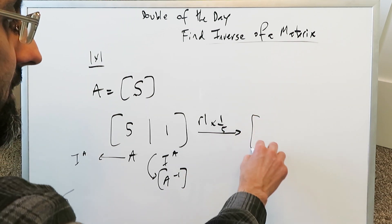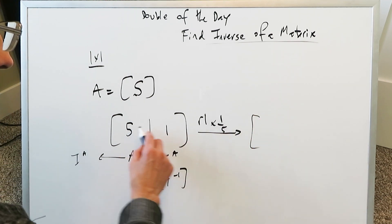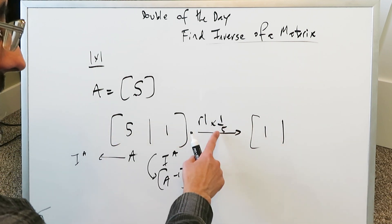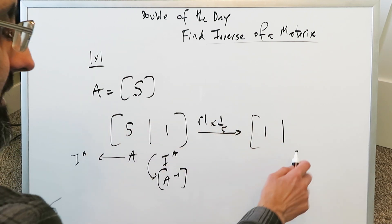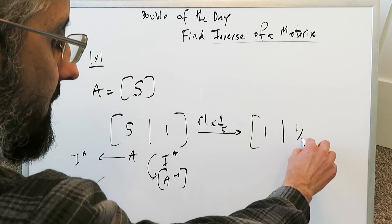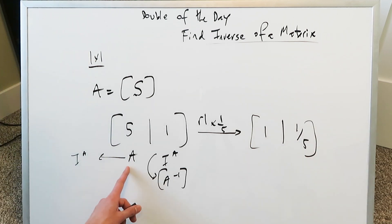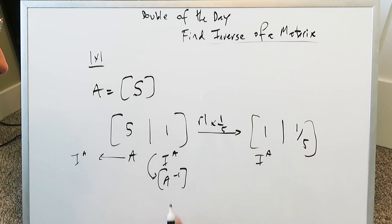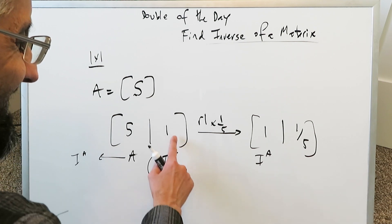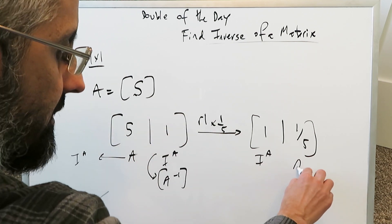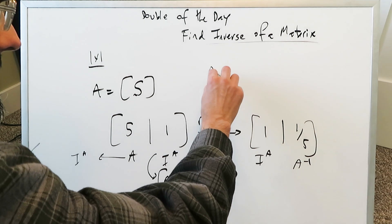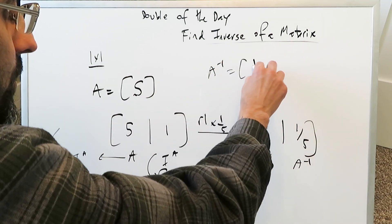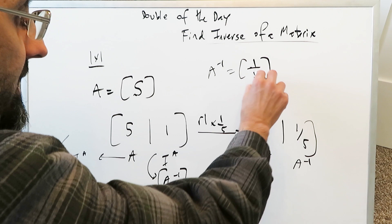When you multiply by one over five, you get a one over here and it multiplies all the way across. This rule affects everything and you'll get one over five over here. Now the A block has become an identity matrix, which is what we wanted, and your identity matrix block has become your inverse. The inverse of this matrix is going to be one over five, and that would be it.